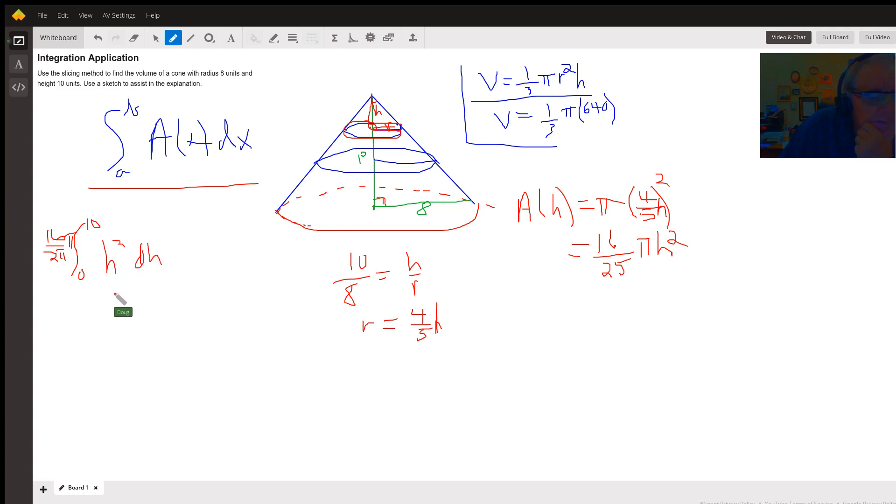And so the antiderivative of h squared is 1 third h cubed. I want to evaluate that from 0 to 10. I still have this 16 pi over 25 up front. And if I substitute 10 for h and 0 for h,